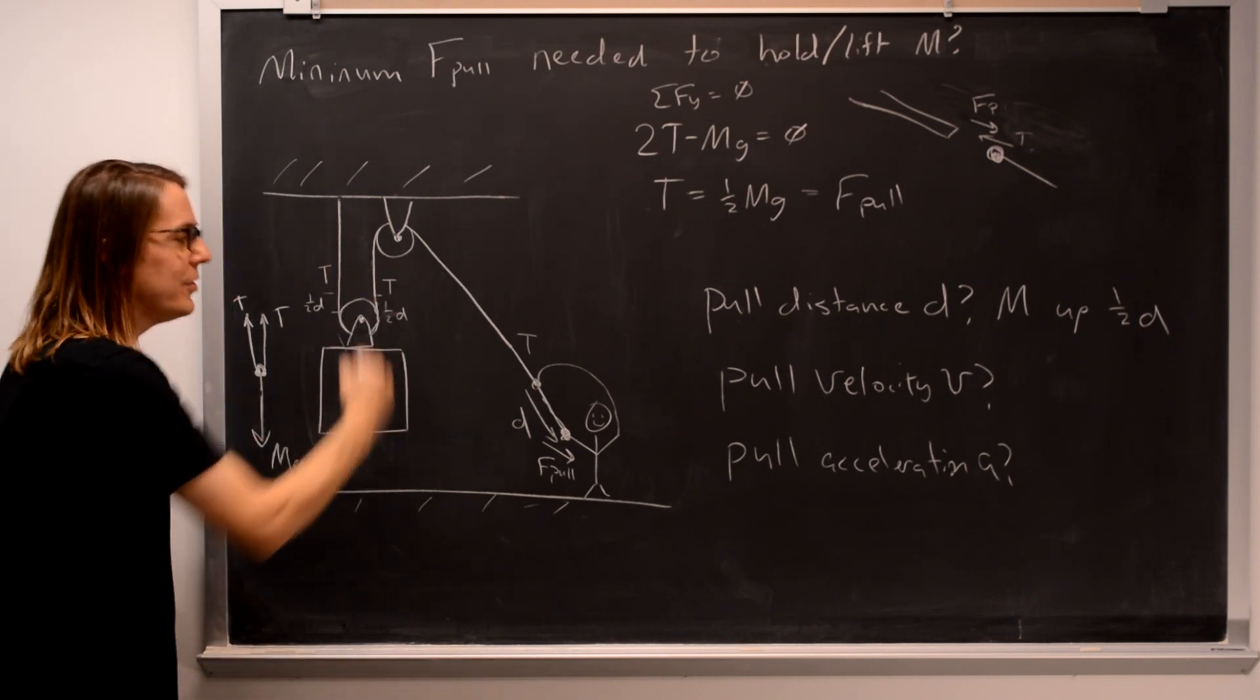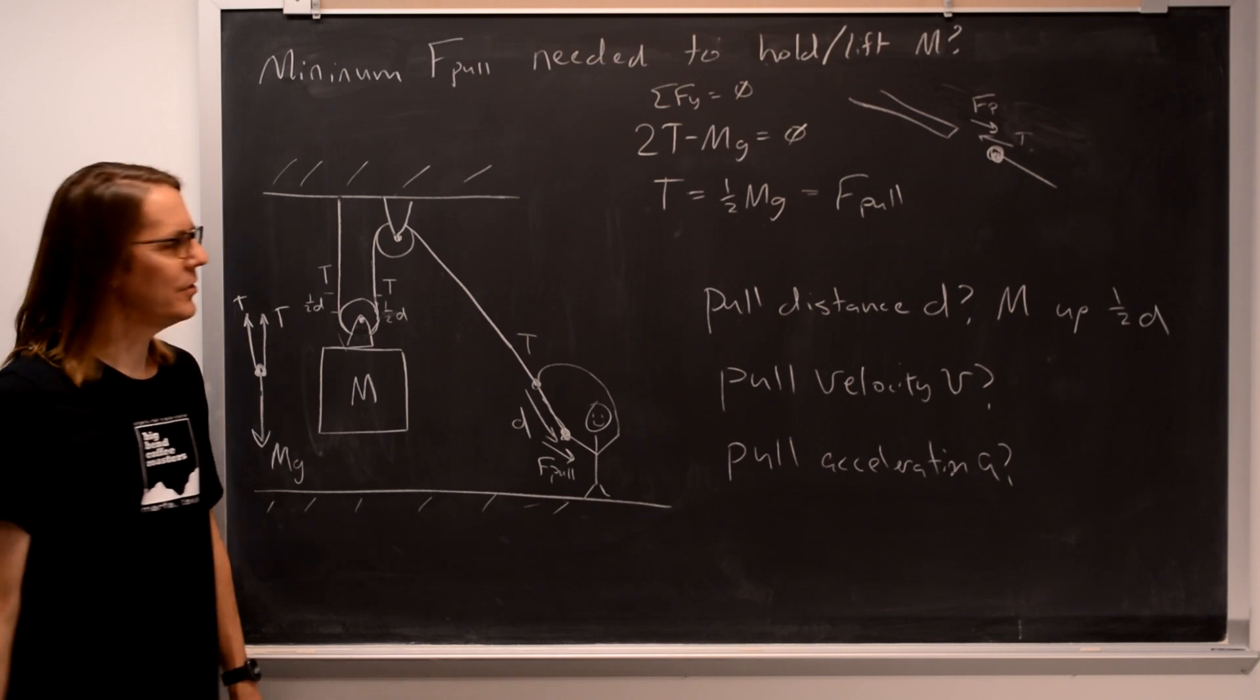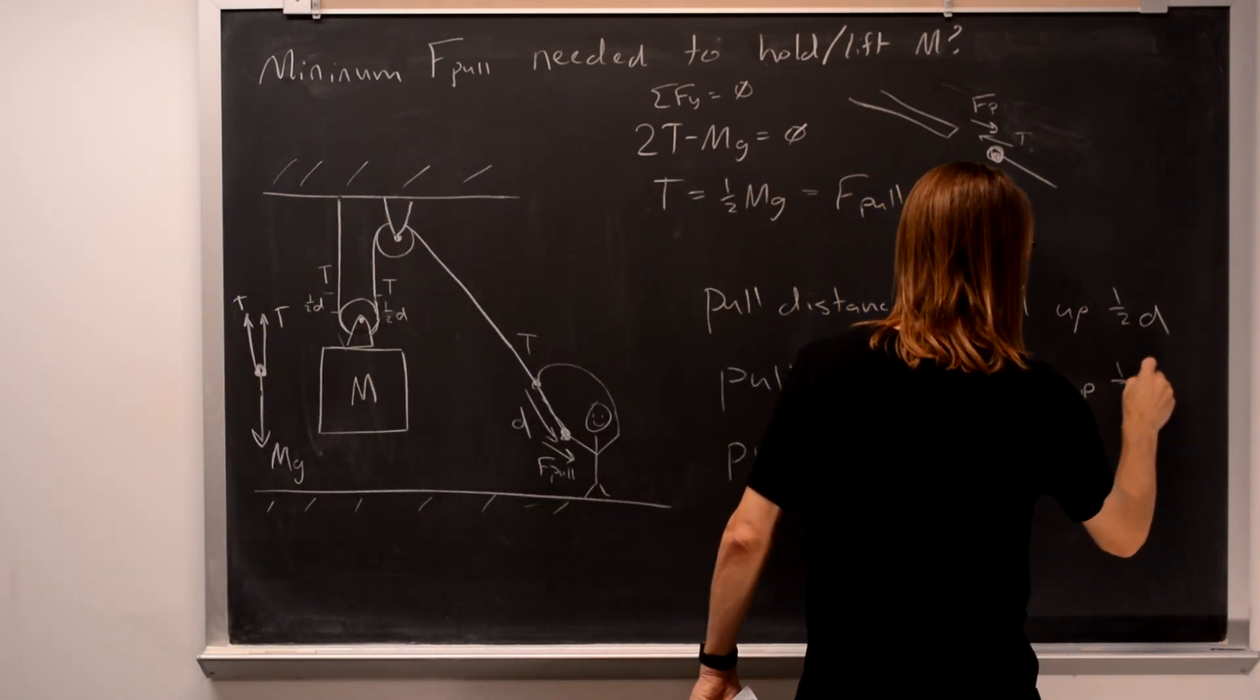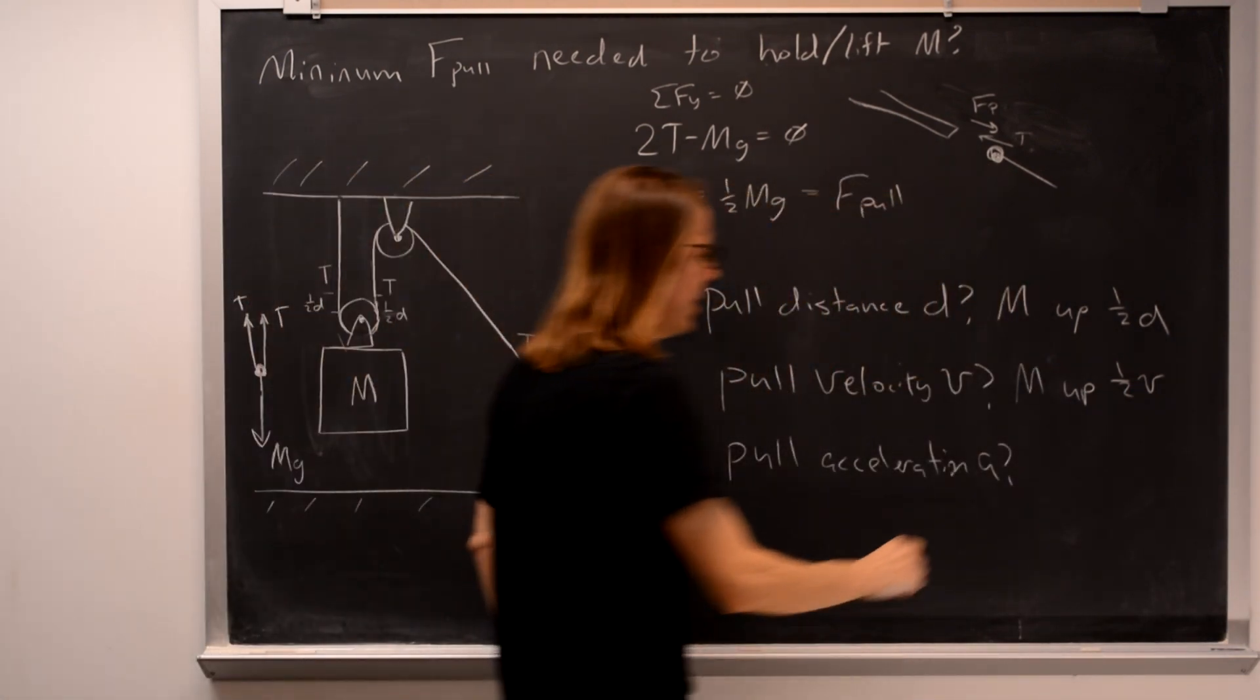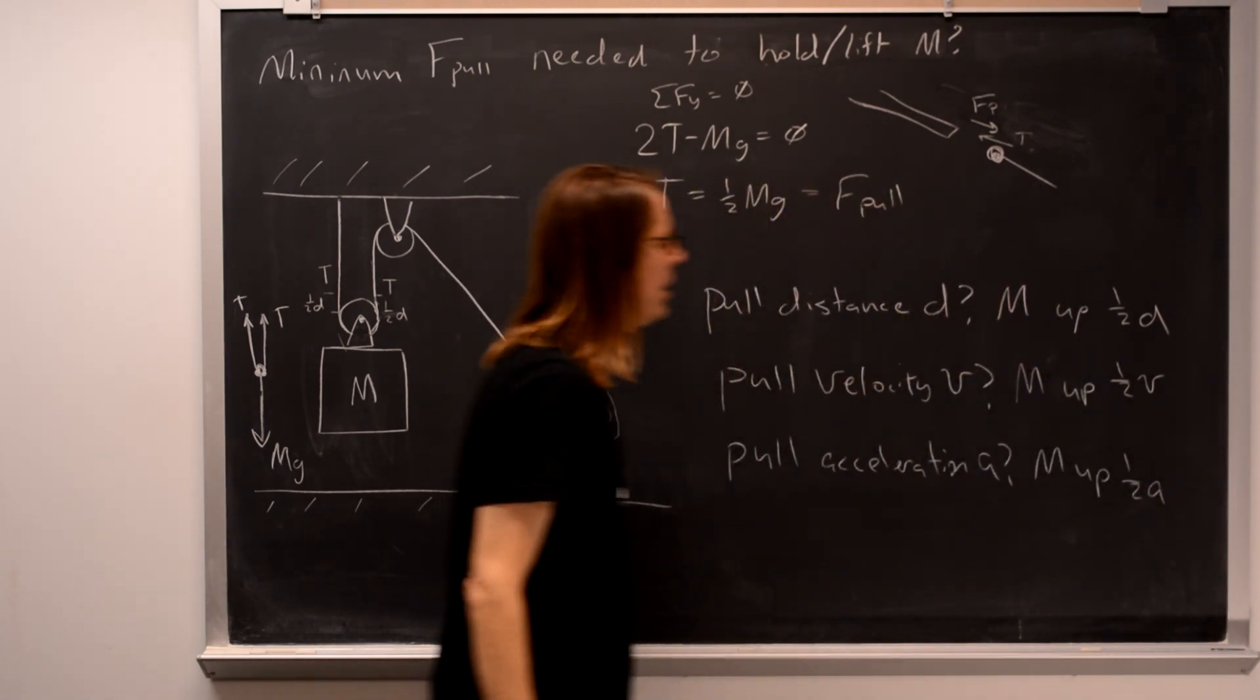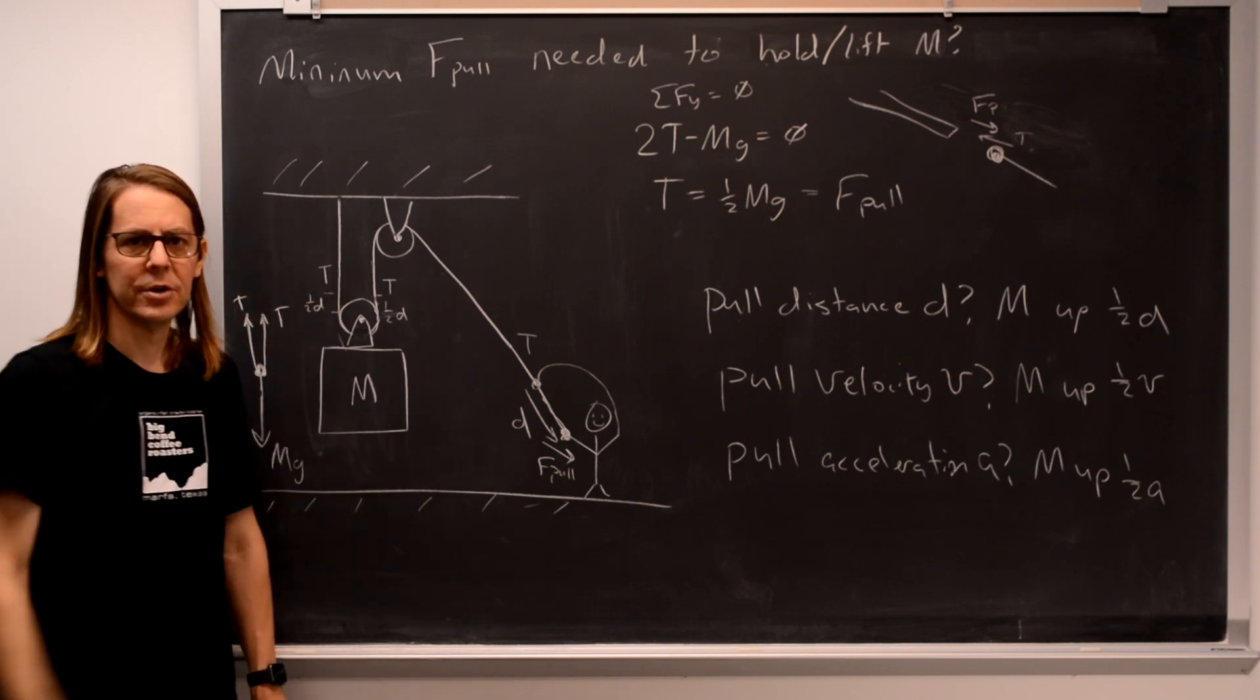What if the question is, what if we pull at velocity V? Well, since the D is a half, then just take a derivative. It's the same thing. The mass will go up at a half V. And what if we accelerate the end of the rope at A, the mass will move up at a half A. So this kind of a pulley setup is something to reduce the amount of force, but it also slows down the kinematics.